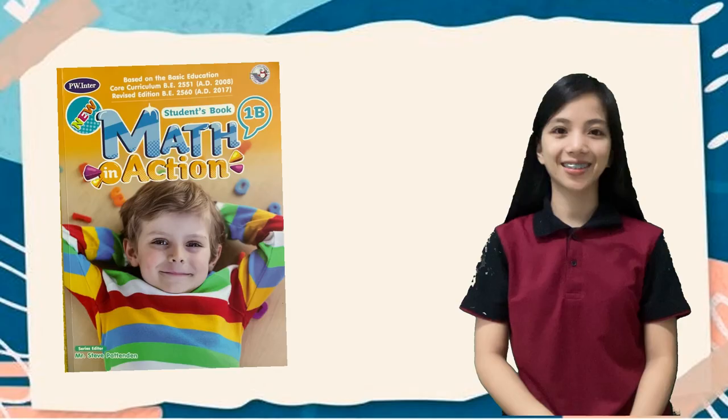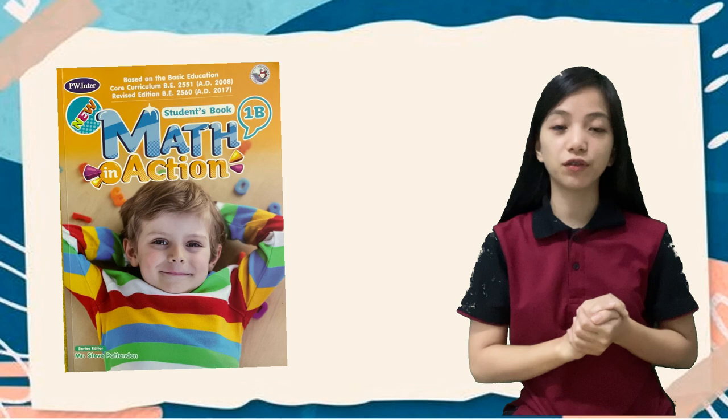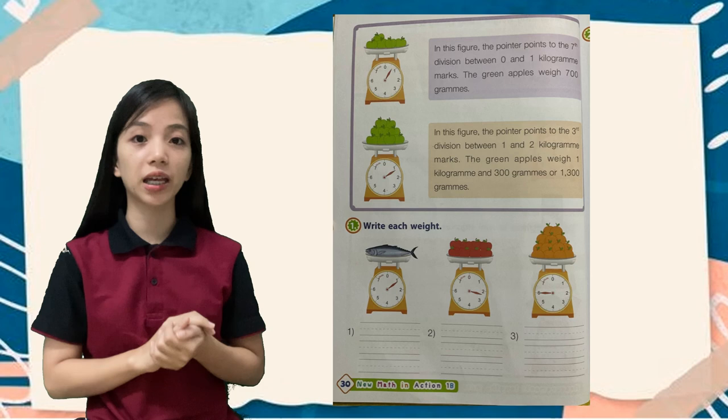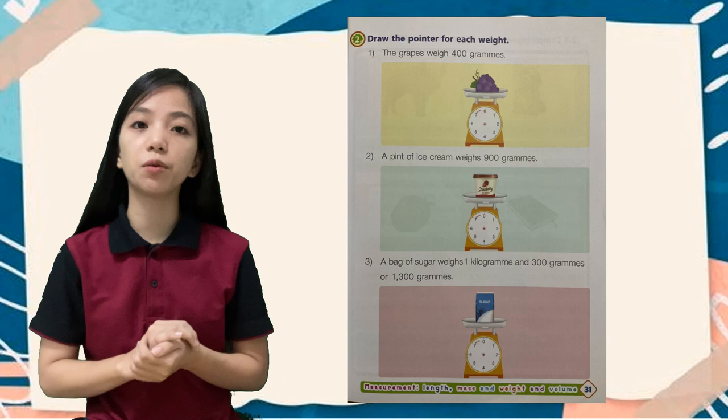For your activity, please open your book on page 30 to 31. On page 30, you are going to write the measurement in weight using kilogram and gram. And then on page 31, you are going to draw a pointer.